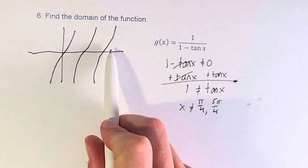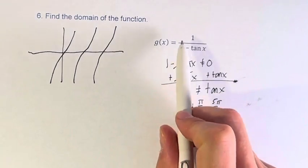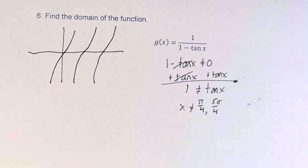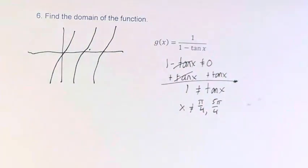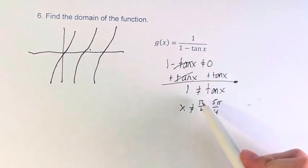This is the general shape of the function, not g of x, just tangent of x. And every pi, the function repeats. As we can see here, pi over 4 plus pi is equal to 5 pi over 4.